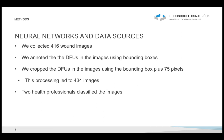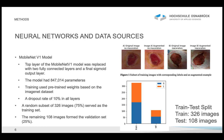Two health professionals classified the images with respect to the maceration status. Here we see on the right wound images that were used to train a deep neural network — a convolutional neural network. We used the MobileNet V1 model as the architecture, but replaced the top layer with two fully connected layers and a final sigmoid output layer. The higher the output score of the final layer, the more likely it is that the image shows skin macerations.